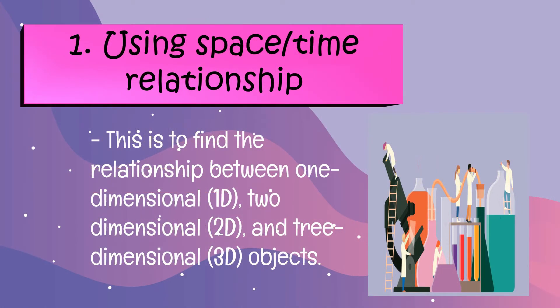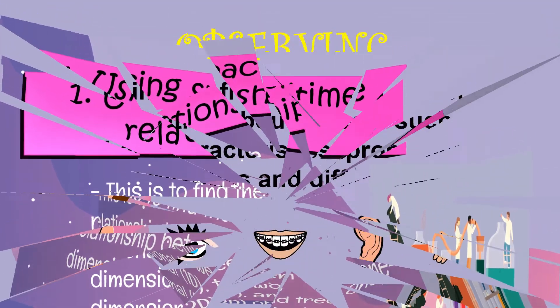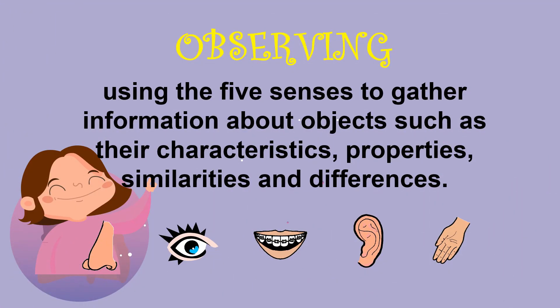Number one, using space-time relationship: this is to find the relationship between one-dimensional, two-dimensional, and three-dimensional objects. Number two, observing: using the five senses to gather information about objects, such as their characteristics, properties, similarities, and differences.